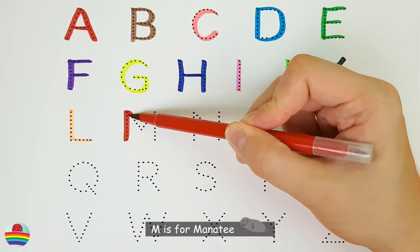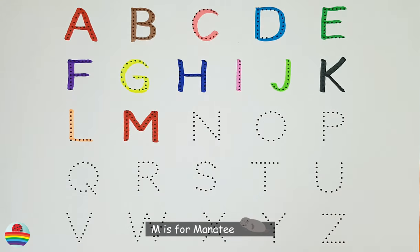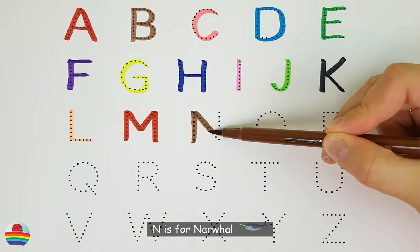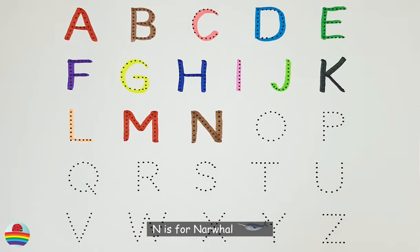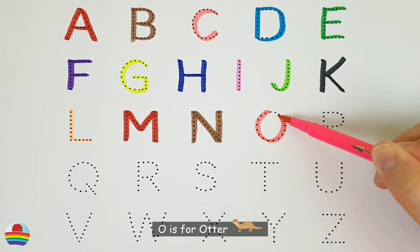M. M is for manatee. M. N. N is for narwhal. N. O. O is for otter. O.